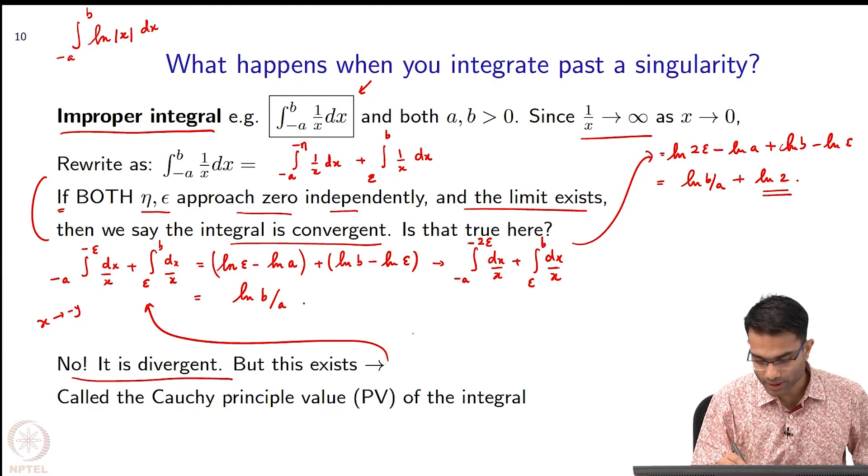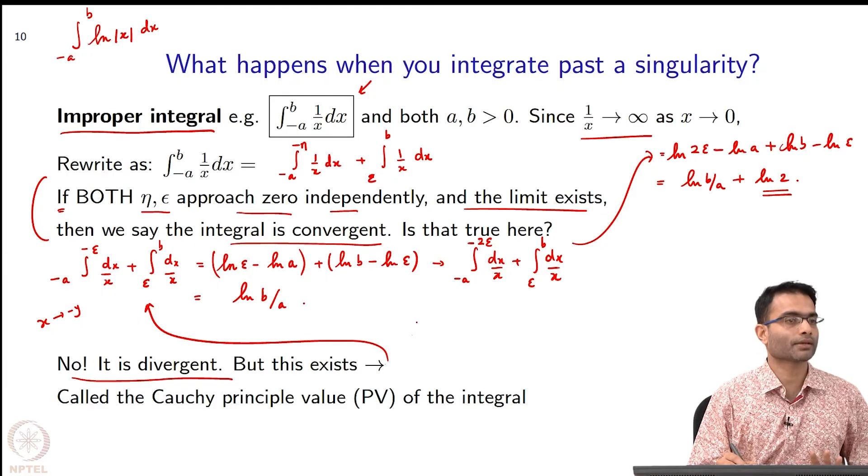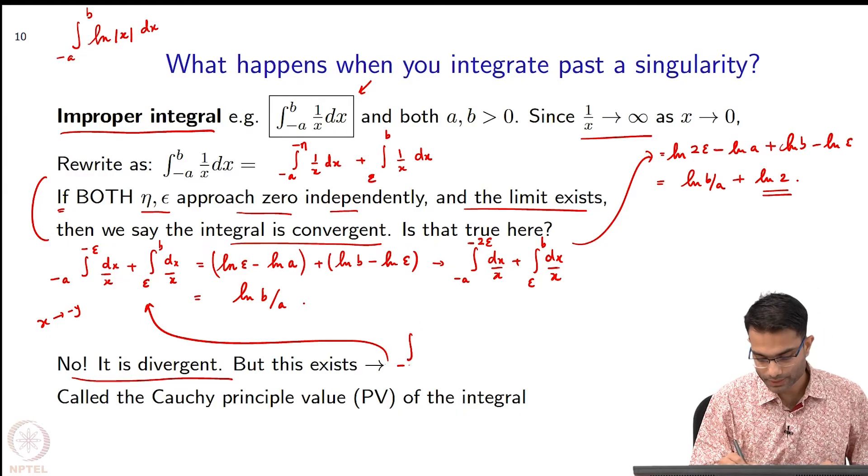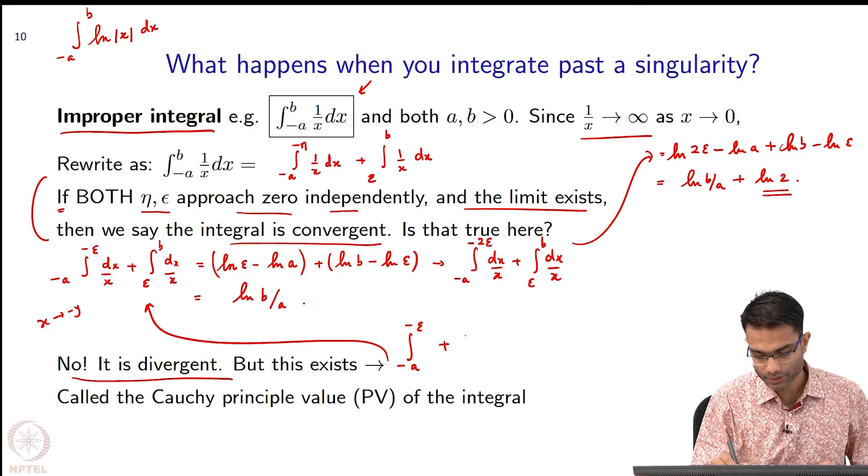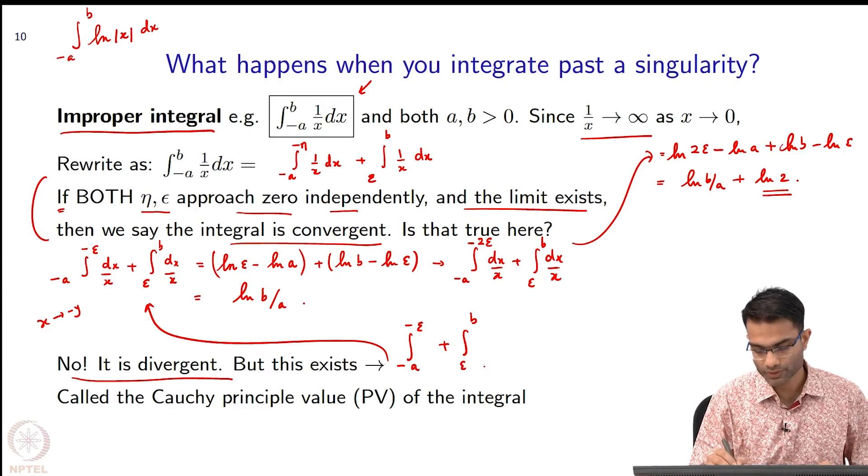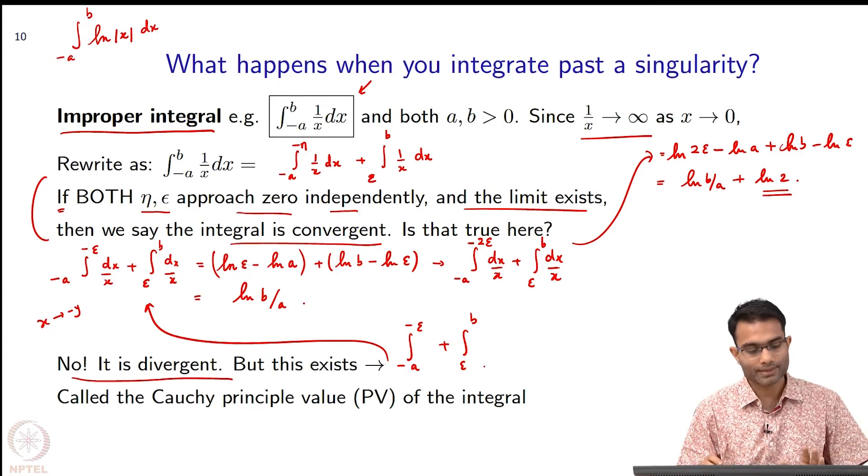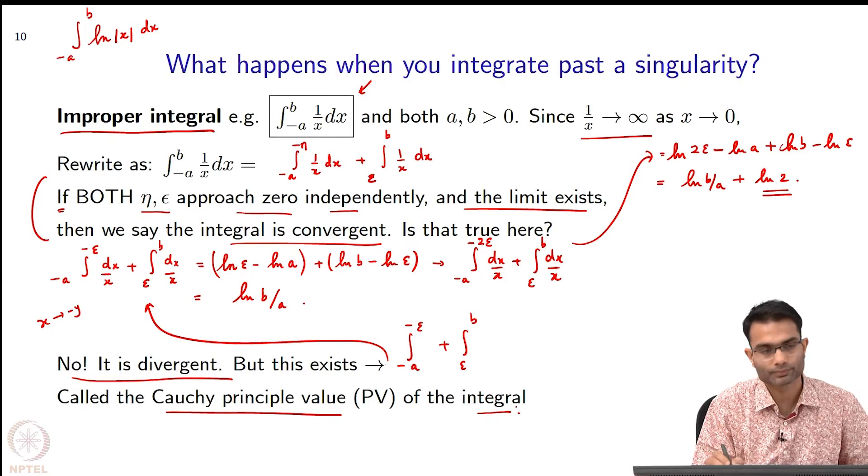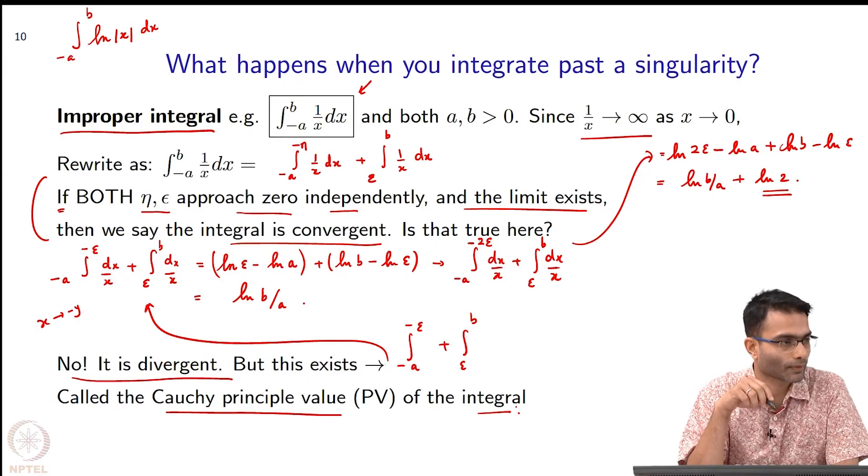But what existed was this term - when they approach not independently, but at the same rate. When they approach at the same rate it existed. When they approach at the same rate and the limit exists, it does not blow up. When it is like this, minus a to minus epsilon plus epsilon to b, if it is of this form and this exists, this is called the Cauchy principal value of the integral.